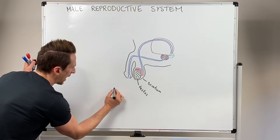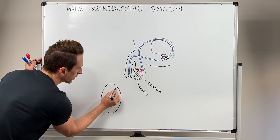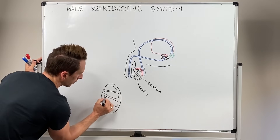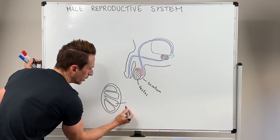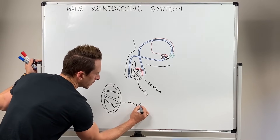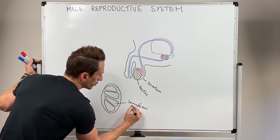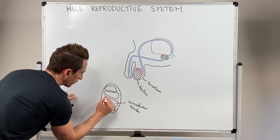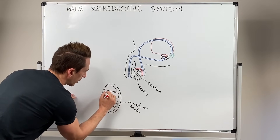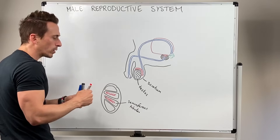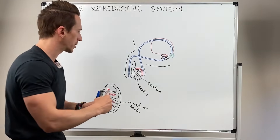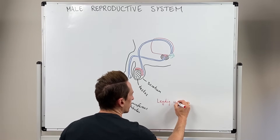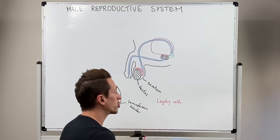If we have a look inside the testes, you'll find that it's made up of individual lobes. Within each lobe you're going to find something called seminiferous tubules — convoluted tubes inside each of the lobules of the testes. Within these tubes there are two major cell types: the Leydig cells and the Sertoli cells.